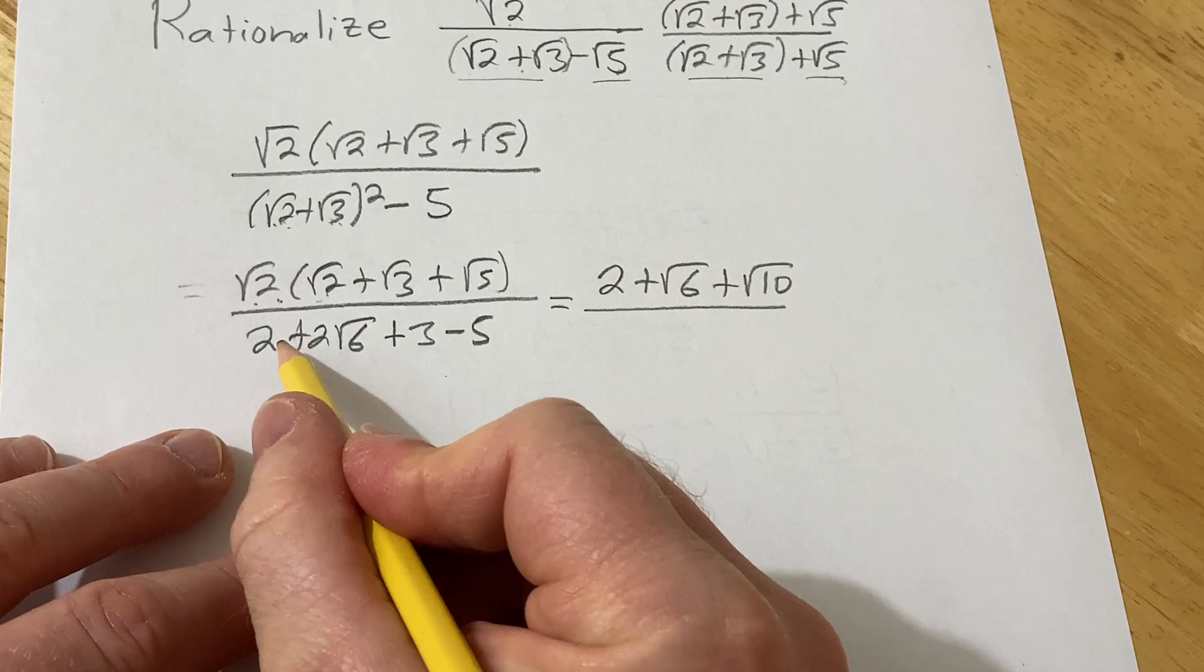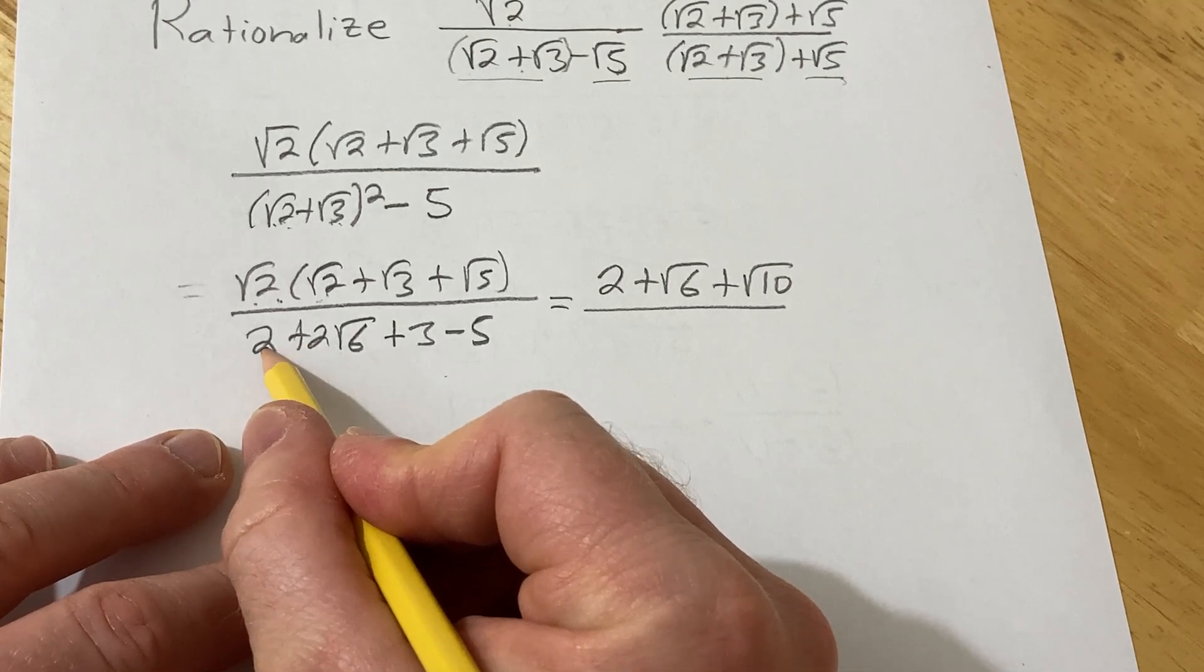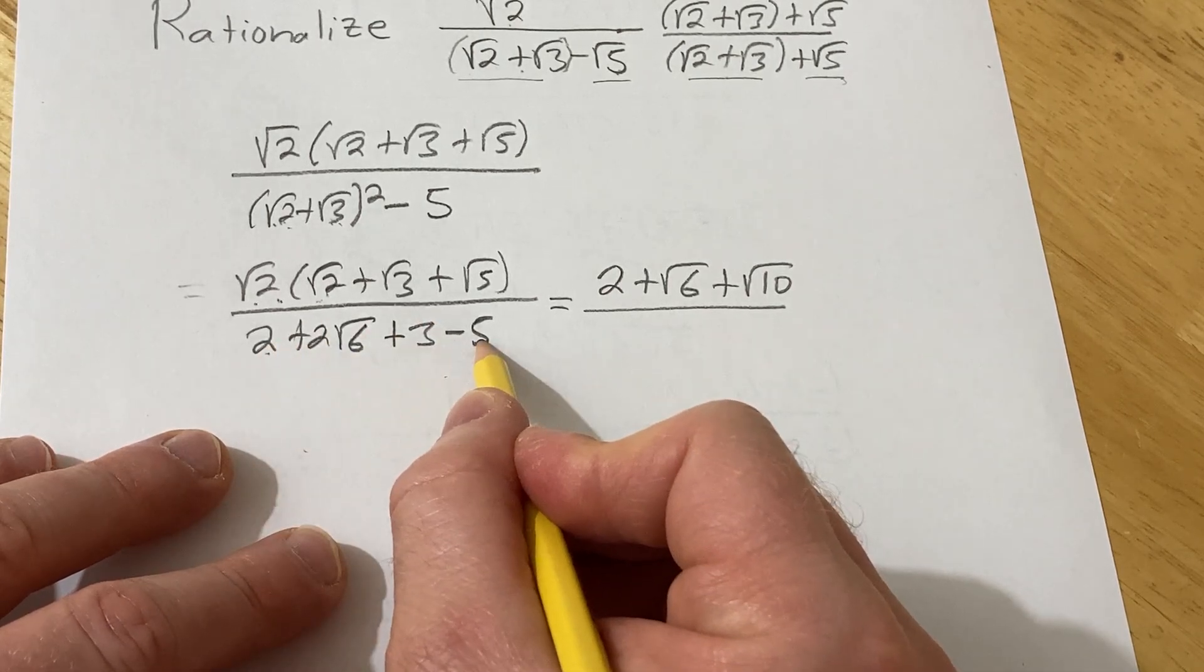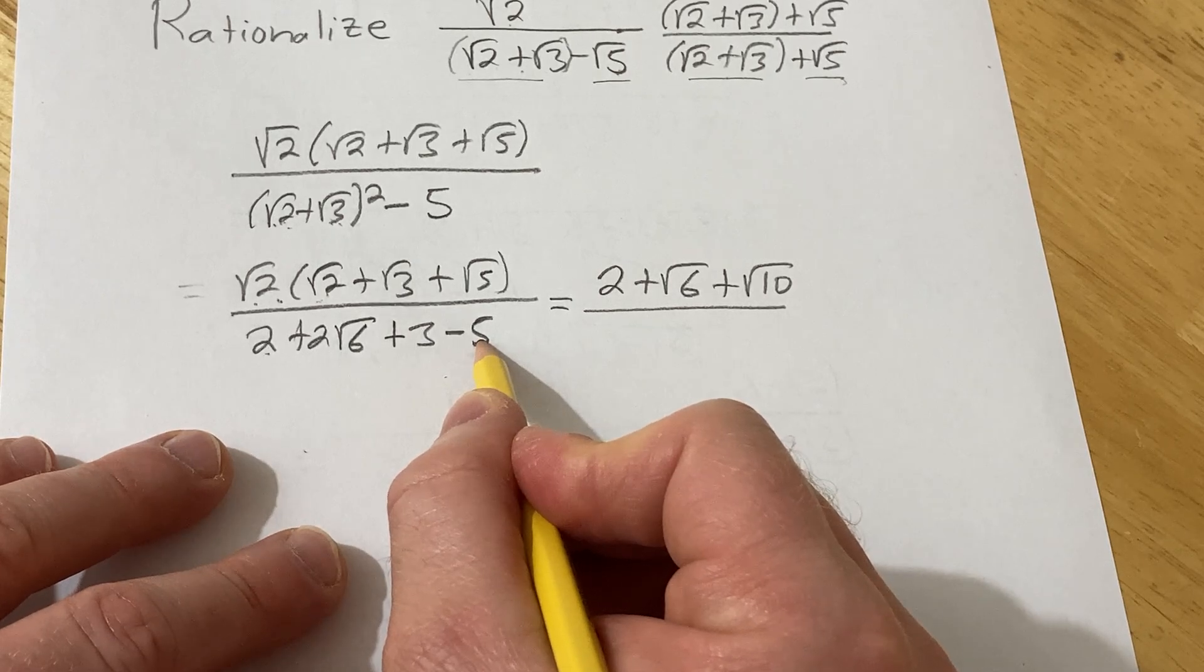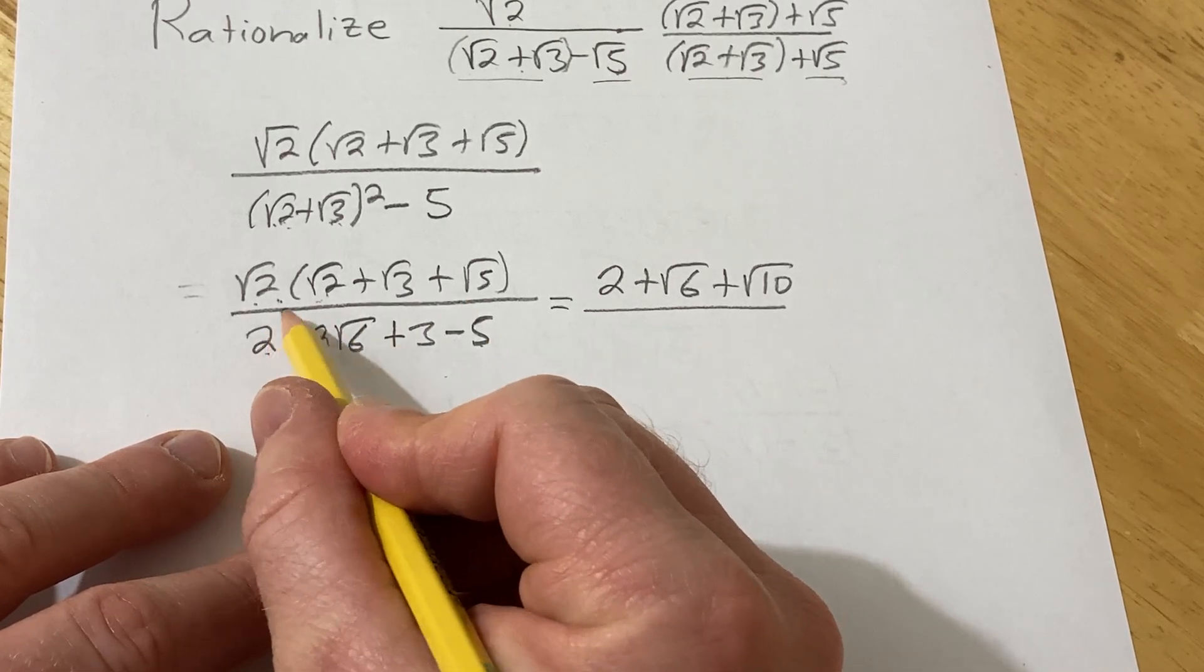And then here, it's 2. Oh, that's cool. 2. 3 minus 5 is minus 2. That worked out really nice. So that's going to cancel, right?